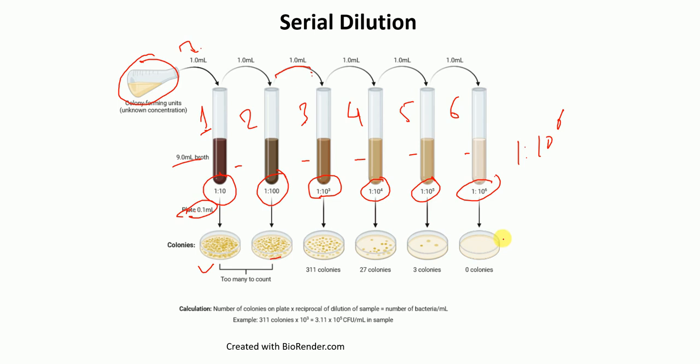However, for tube number 3 we can count the colonies — there are 311 colonies. For tube number 4, there are 27 colonies. For tube number 5, there are 3 colonies. However, for tube number 6 there are no colonies.